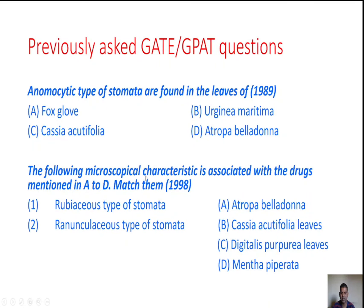Question three: Match microscopical characteristics with the drugs. Rubiaceous type of stomata — found in Senna (Cassia acutifolia), so the answer is B. Ranunculaceous type of stomata — from the bad alphabet group, the answer is Digitalis (option C).